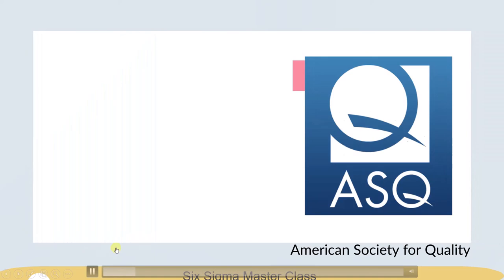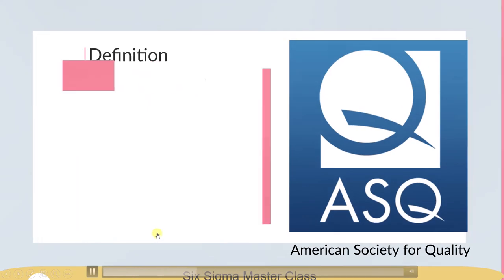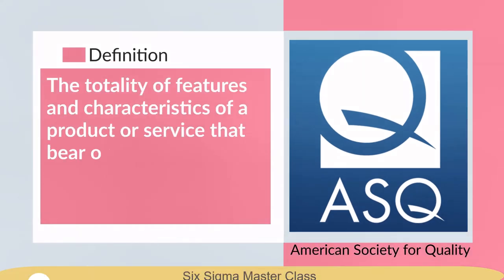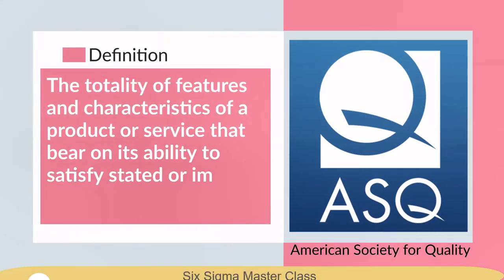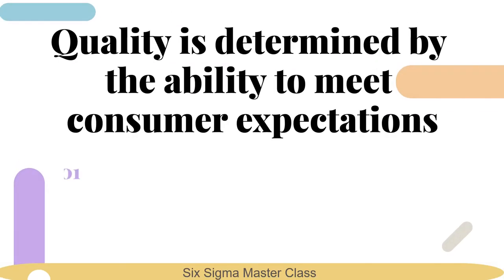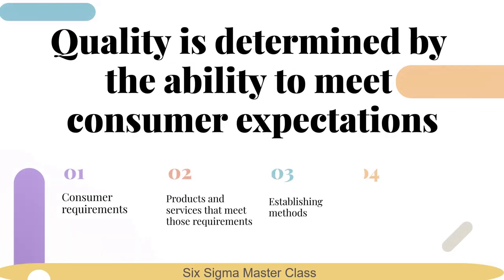The American Society for Quality defines quality — which is also the ISO definition — as the totality of features and characteristics of a product or service that bear on its ability to satisfy stated or implied needs. Simply said, quality is determined by the ability to meet consumer expectations.